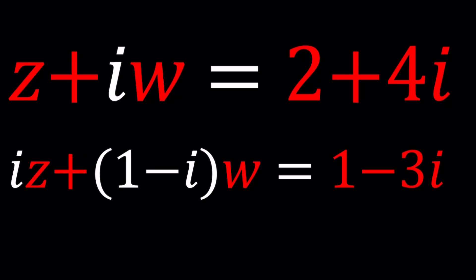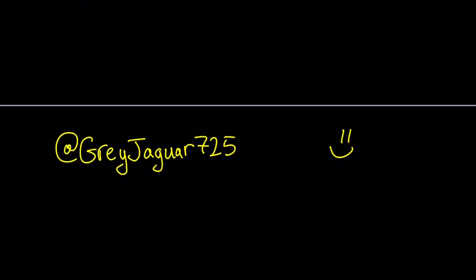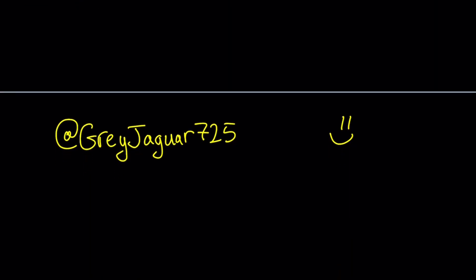This problem comes from one of my viewers, greyjaguar725. Thank you for the suggestion. So let's go ahead and take a look at this equation. Let me rewrite it: Z plus IW equals 2 plus 4I and IZ plus 1 minus I times W equals 1 minus 3I.